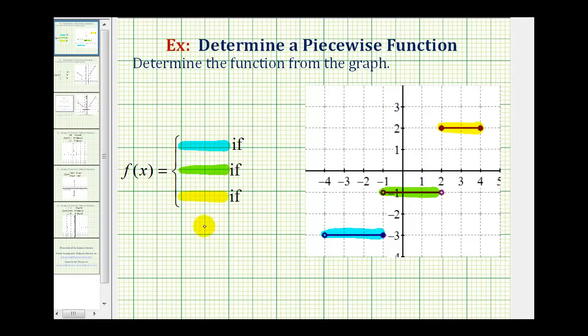This is a nice example to begin with because each piece is a constant function, meaning each piece is a horizontal segment. Remember, all horizontal lines are in the form of y equals some constant, or in this case, f of x equals a constant. So we'll define the function rule for each piece, and then we'll define the domain or the x values for each piece.